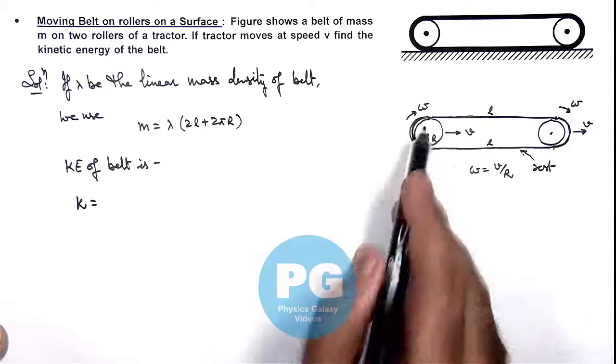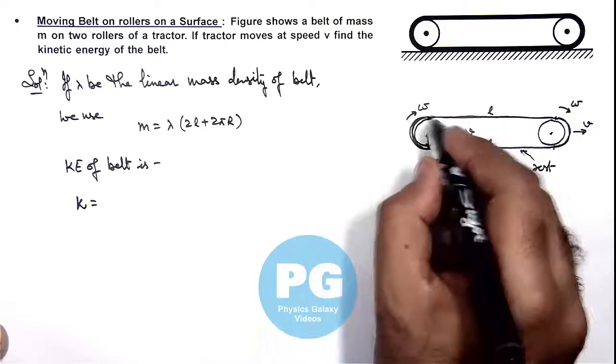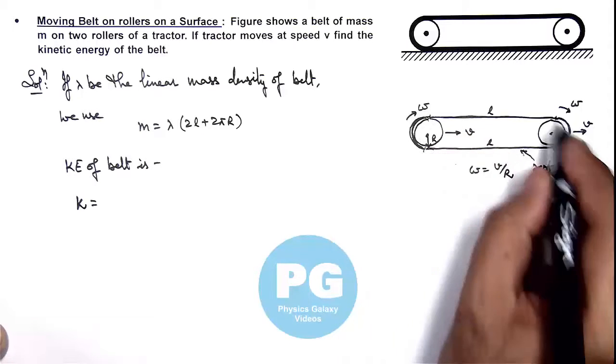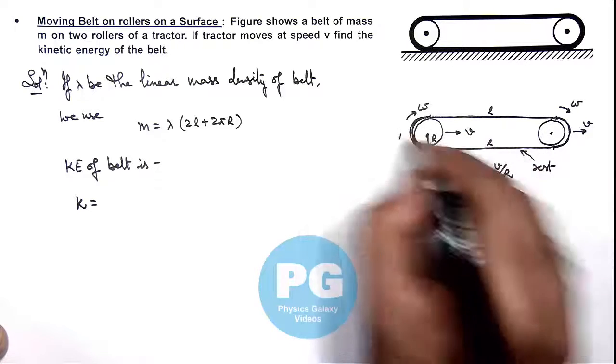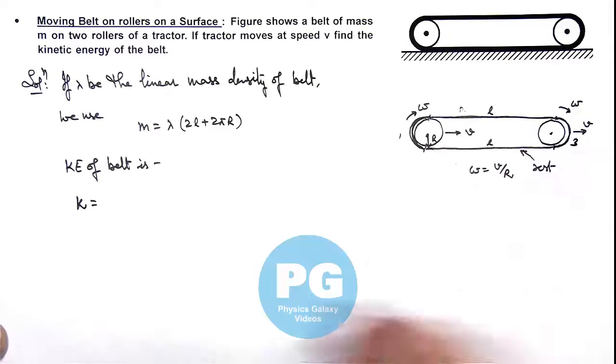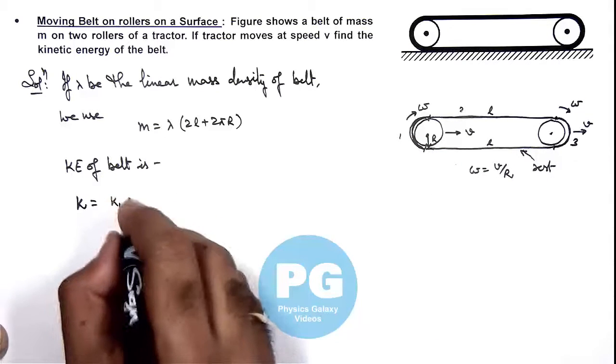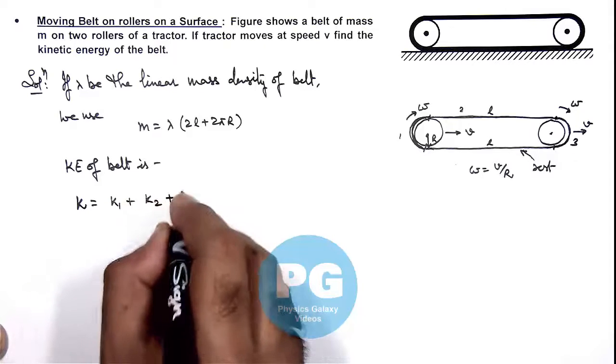So in this situation we can write, we can even split the parts as 1, 2, and 3. So we can write kinetic energy will be K1 plus K2 plus K3.